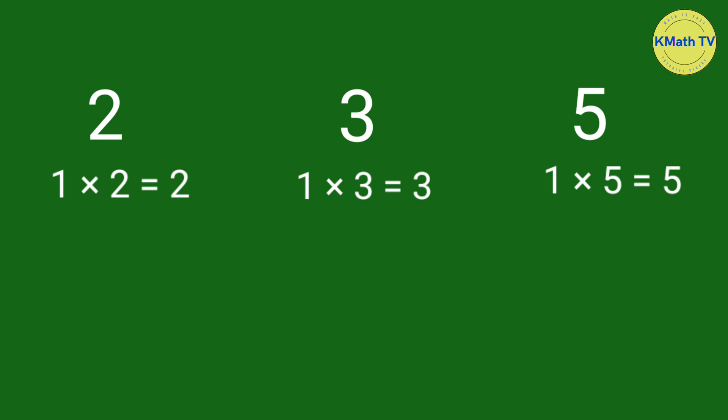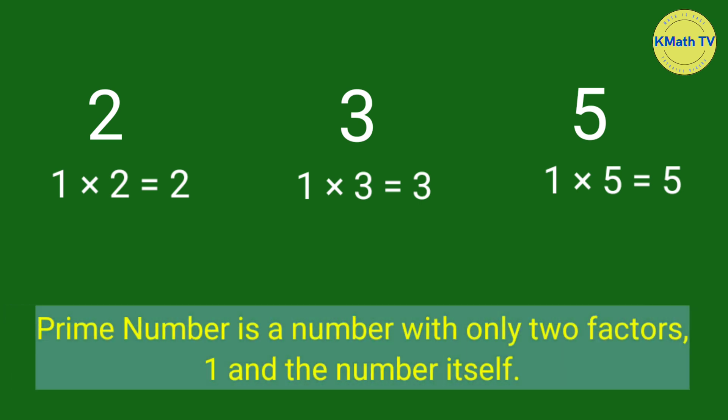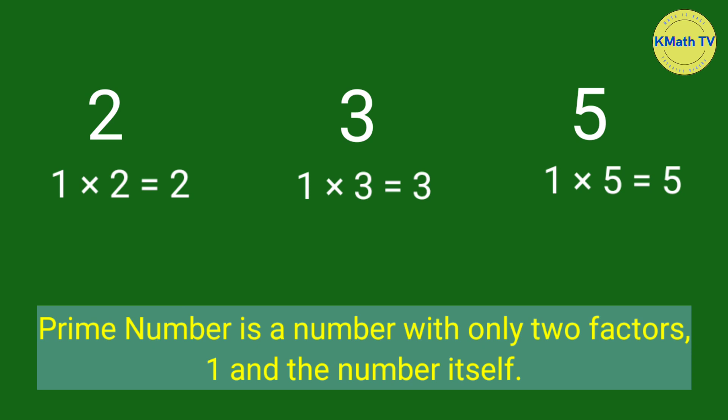No other numbers can be multiplied to get the product 2, 3, and 5 except 1 and the number itself. Therefore, these numbers are prime numbers. Prime number is a number with only two factors, 1 and the number itself. When we say factors, these are the numbers we multiply to get the product.